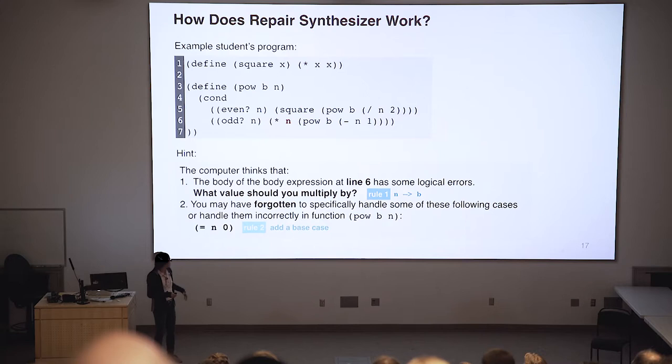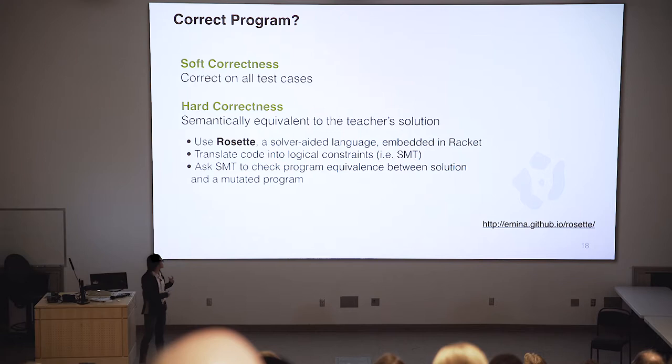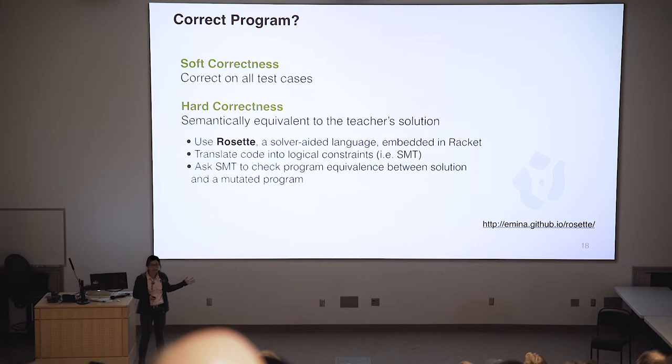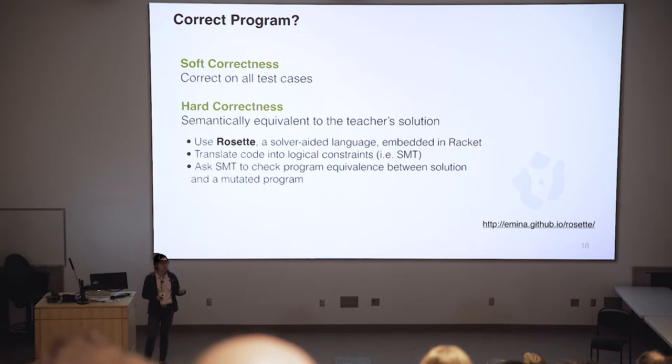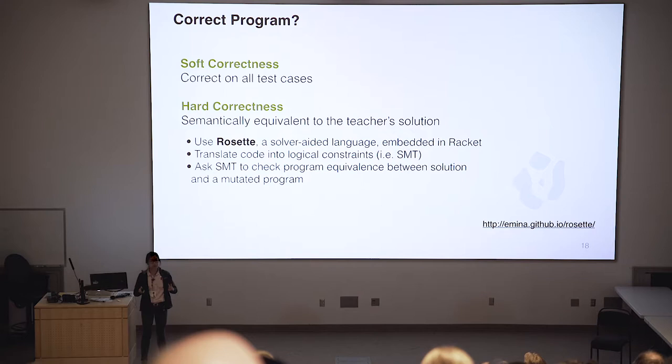Because we know we applied rule one and rule two, we generate a readable text message to the student accordingly. Our system supports two kinds of correctness conditions. The first is soft correctness, meaning it just tests the student program against a list of test cases provided by the instructor. You can also use hard correctness, which means the student program has to be semantically equivalent to the instructor's solution. To check hard correctness, we apply Rosette, which is a solver-aided language embedded in Racket, to prove that two Racket programs are equivalent or not.